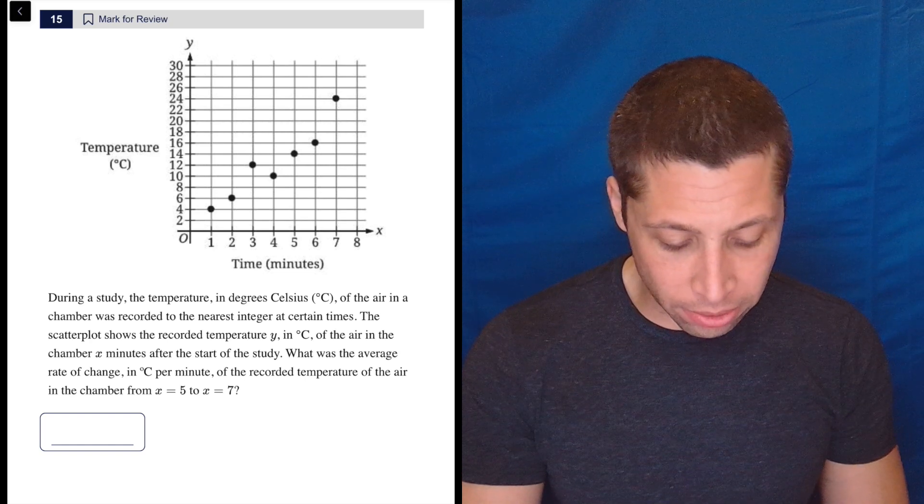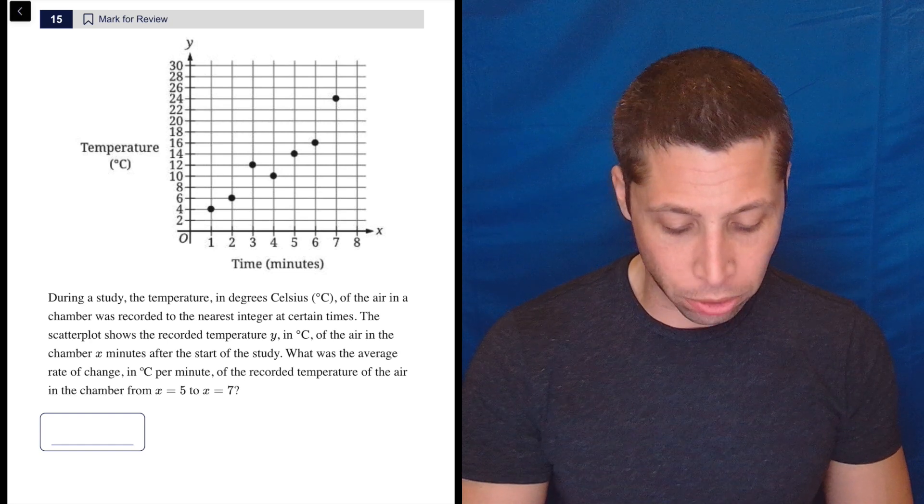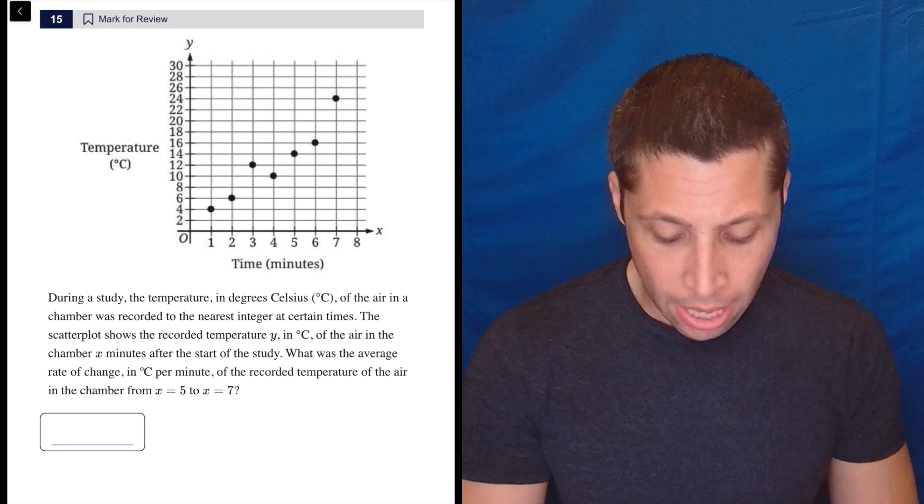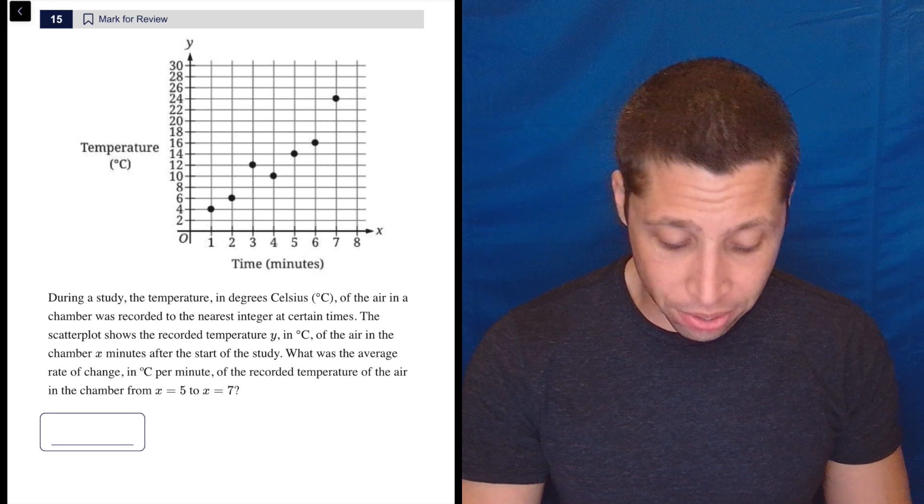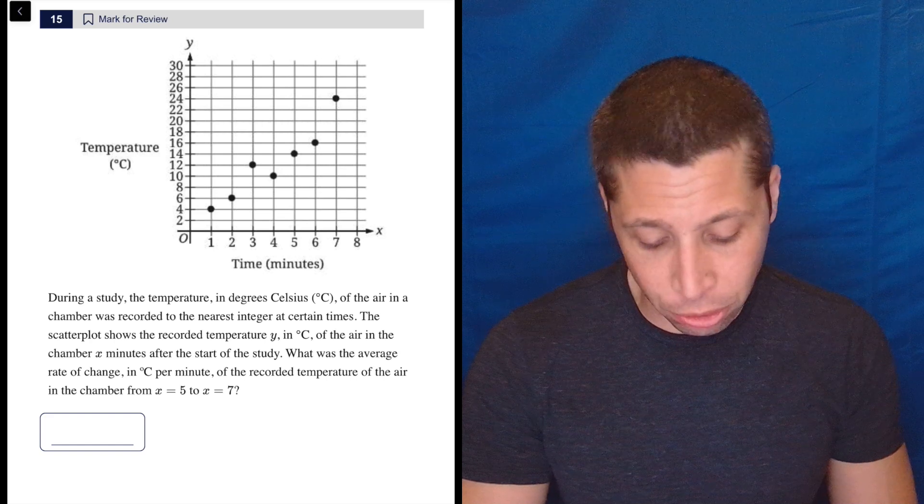During the study, the temperature in degrees Celsius of the air in a chamber was recorded to the nearest integer at certain times. The scatter plot shows the recorded temperature y in degrees Celsius of the air in the chamber x minutes after the start of the study.